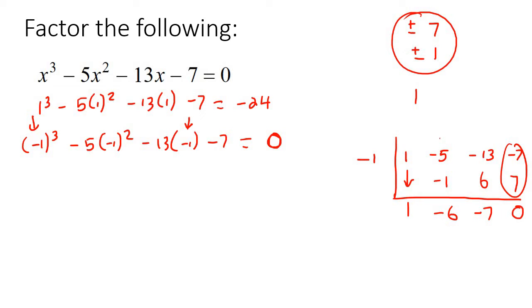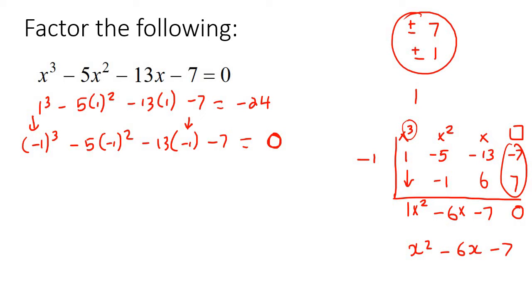And then you're going to add these and you're going to get 0. Now remember, this was your x cubed, this was your x squared, this was your x, and then this was your normal number. With synthetic division, you drop each of those — so this becomes x squared, the next one becomes x, and then the next one's just the number. So it's x squared take away 6x take away 7.